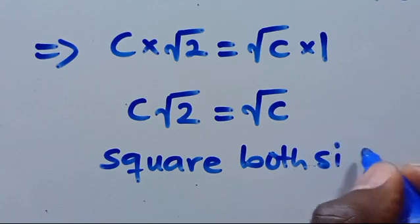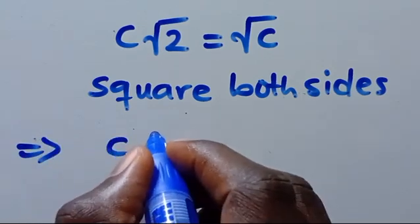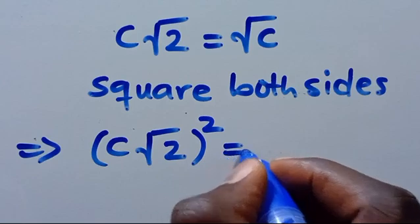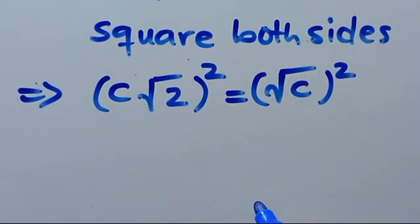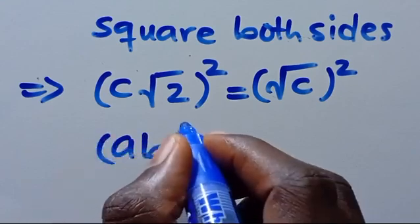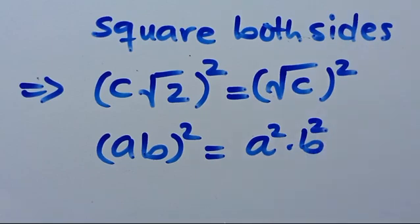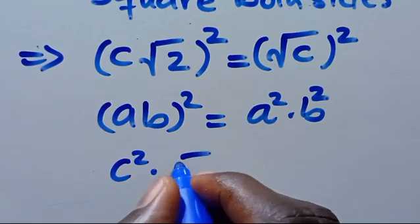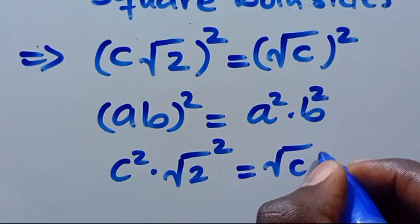To eliminate the roots on both sides, we square both sides. So we have (C times root 2) to the power of 2 equals (root C) to the power of 2. Recalling that (A times B)² equals A² times B², this gives us C squared times (root 2) to the power of 2 equals C to the power of 2.